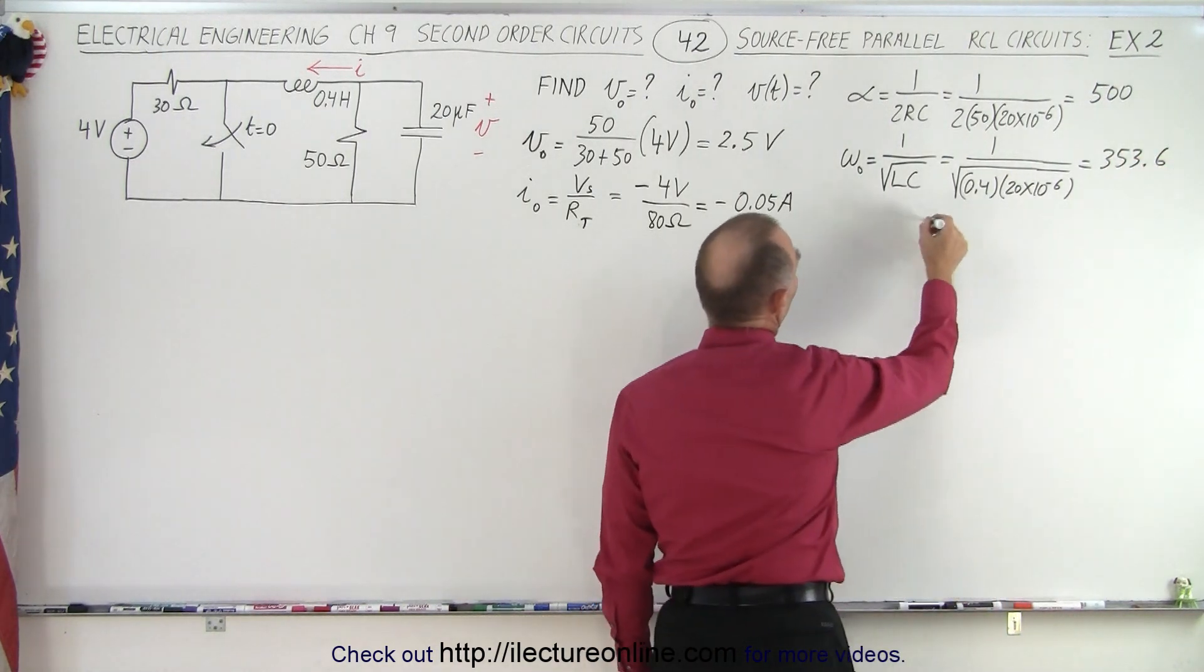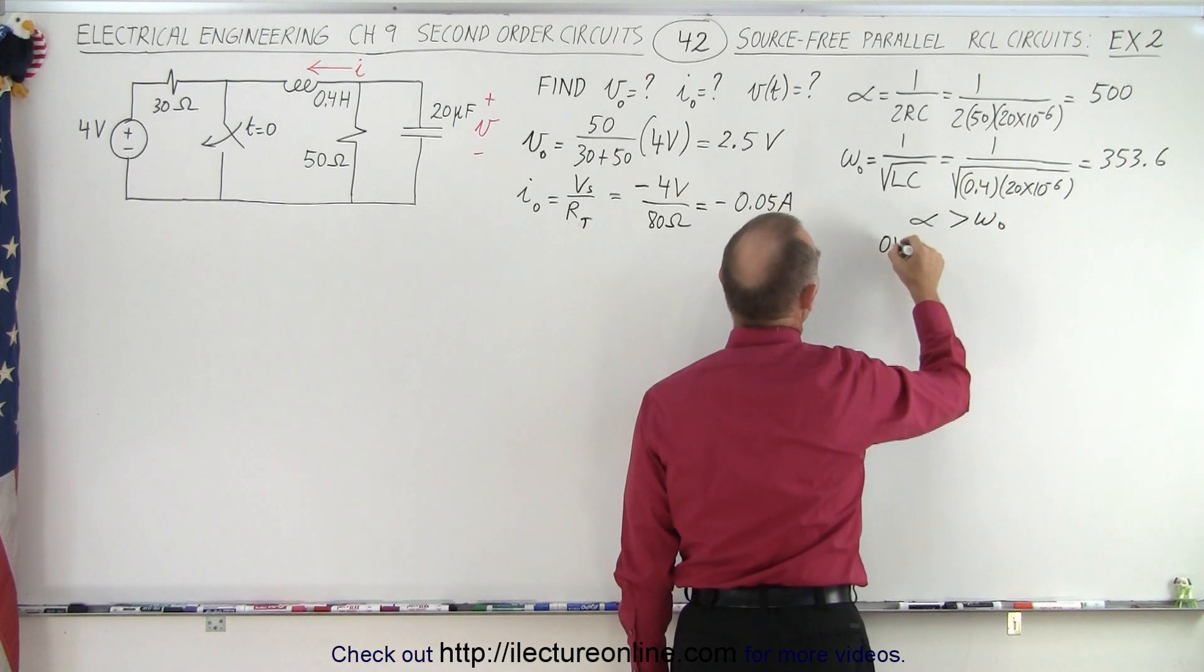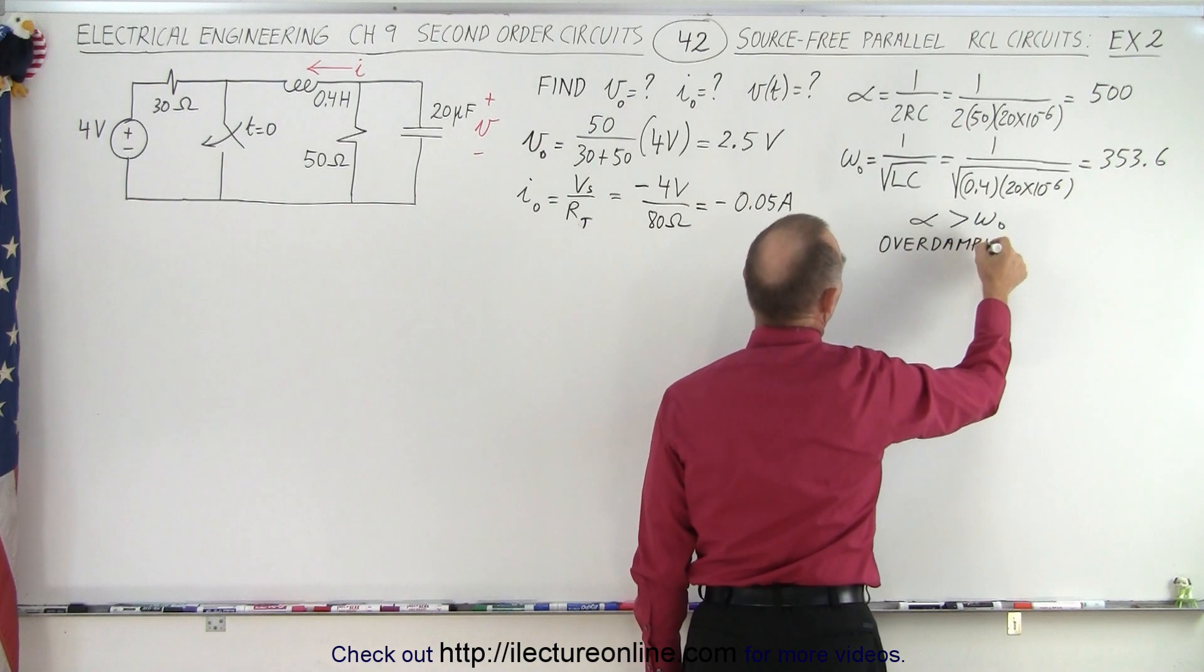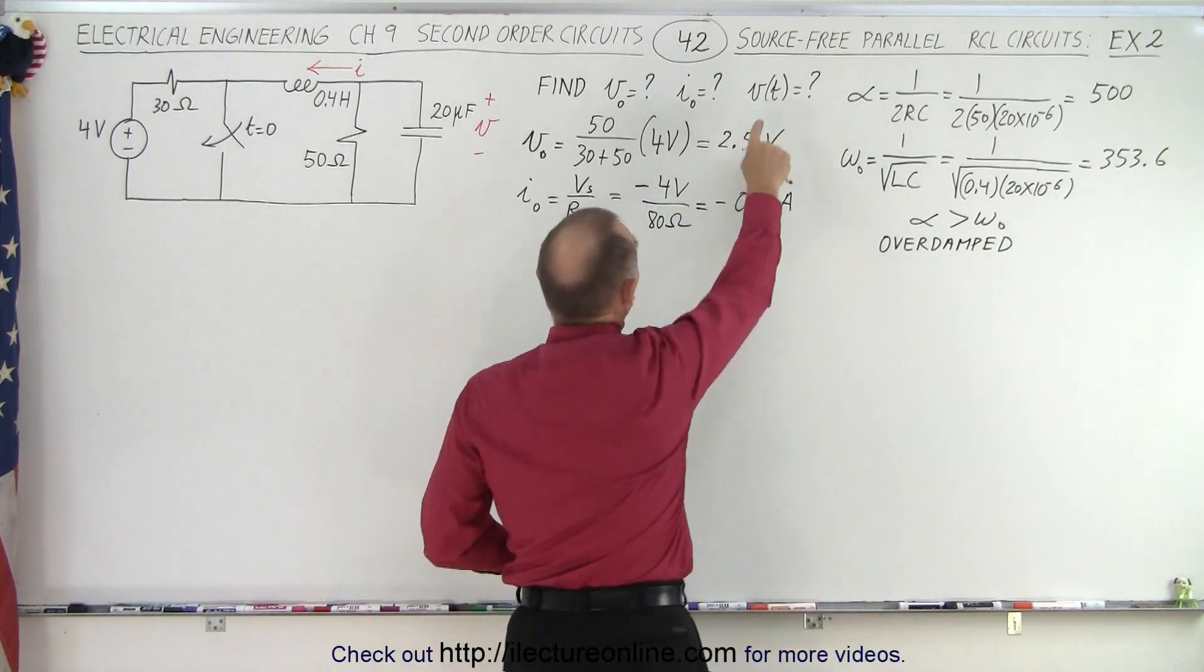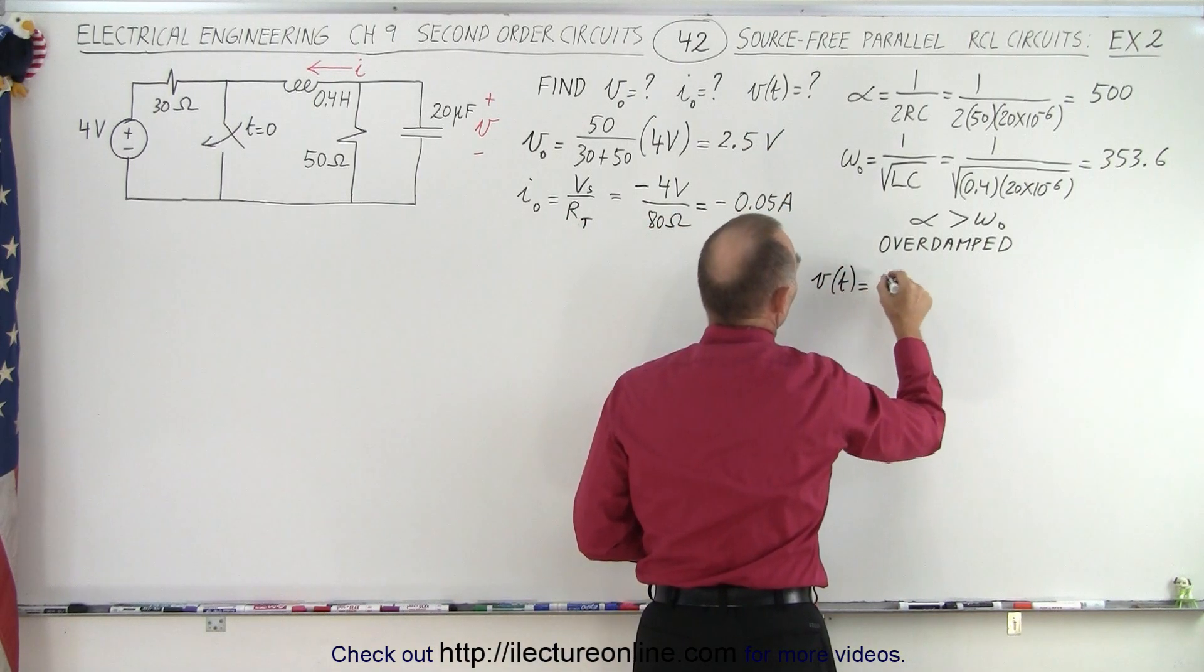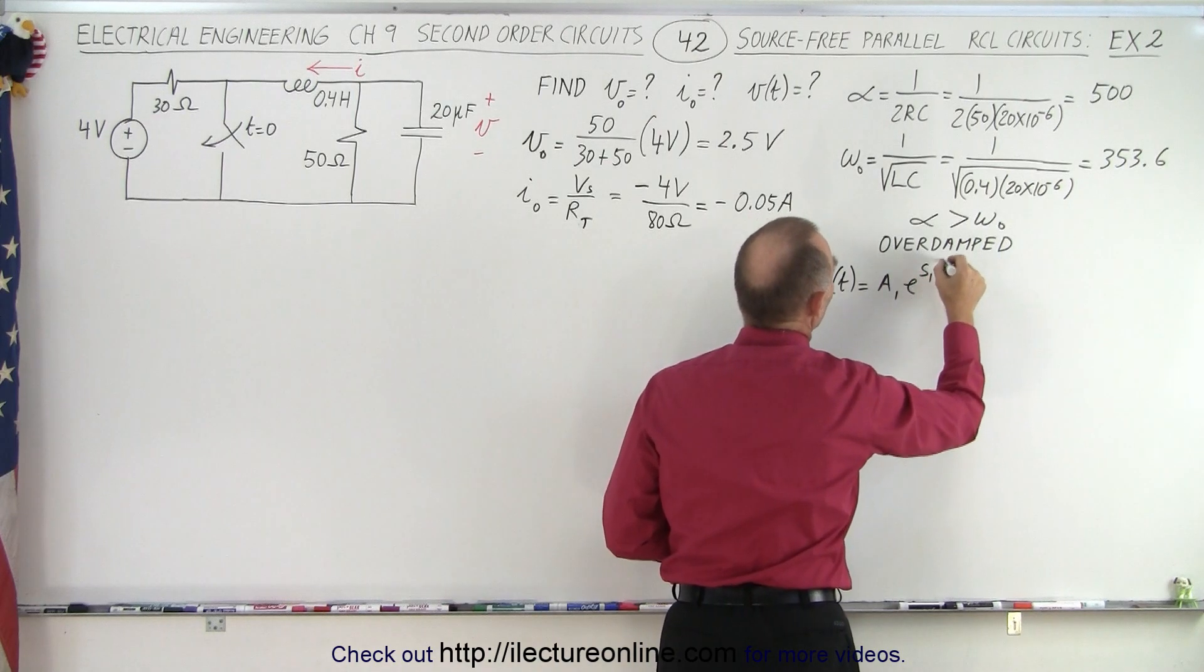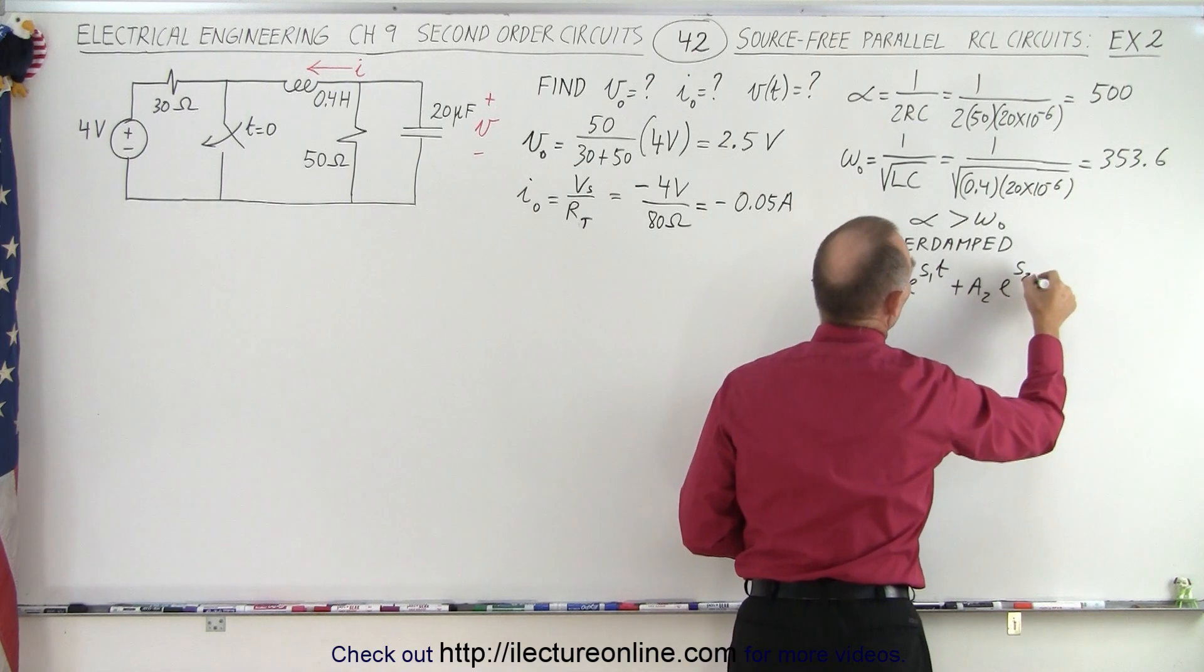All right, clearly alpha is larger than omega sub naught, which means that we have an overdamped system. And if it's overdamped, then the equation for the voltage as a function of time becomes the following. It is equal to A1 times E to the S1T plus A2E to the S2T.